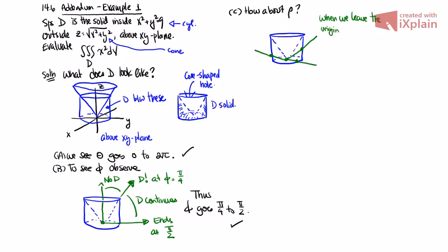And we leave the origin. There is D from the get-go. We are immediately in D. So D starts at rho equals 0. Now it ends at the cylinder.